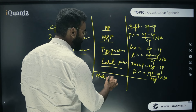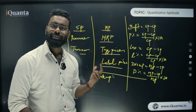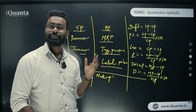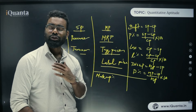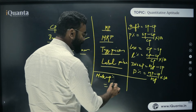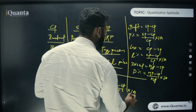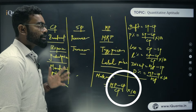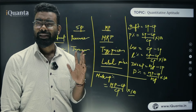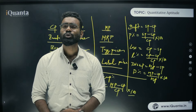Markup percent is by what percentage your mark price is more than your cost price — it's the percentage increase from cost price to mark price. Markup % = (MP − CP) / CP × 100. So to summarize: there are three key prices — cost price, selling price, and mark price — and four key percentages: profit%, loss%, discount%, and markup%.